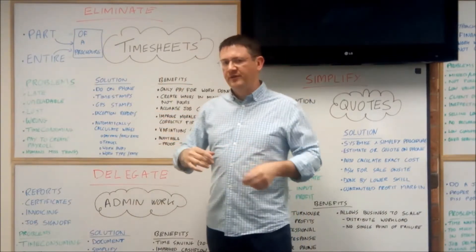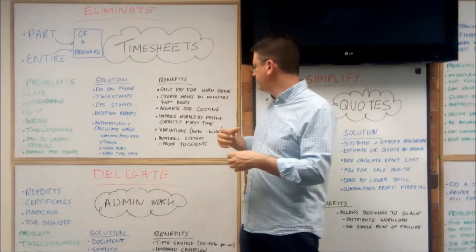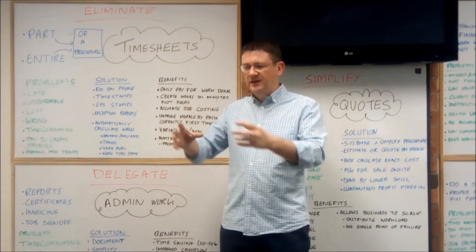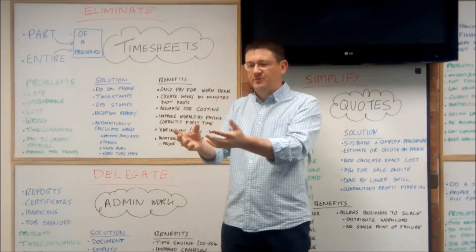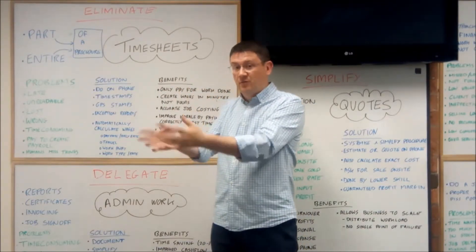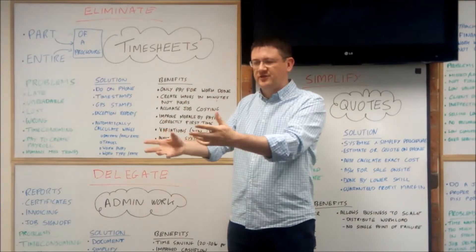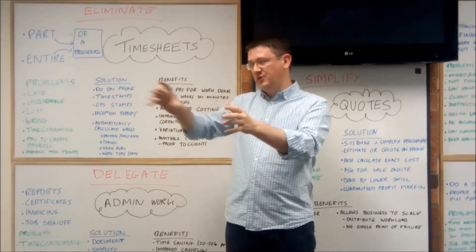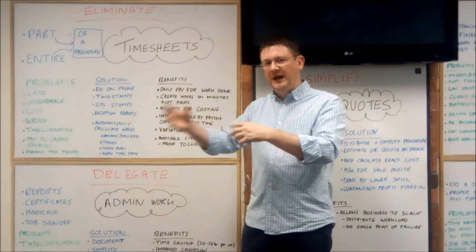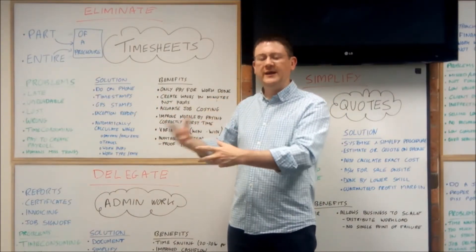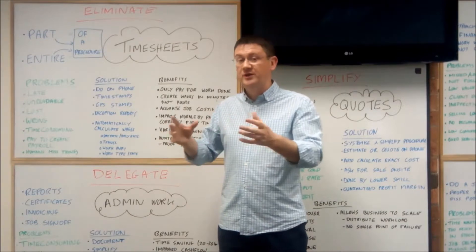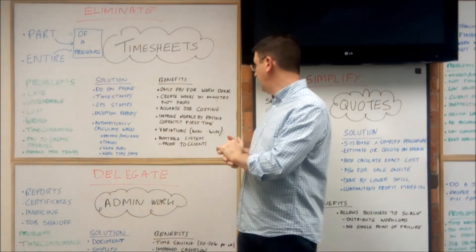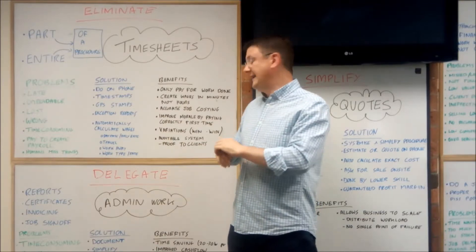The third benefit is something not a lot of people have thought about: accurate job costings. If we've got all the time entries in a nicely organized system and we know what we're paying the lads — their wages are in an organized system — we've actually got accurate labor costs. If we can tag those to a particular job, we now know exactly how much money we're spending on labor per job, which most trade businesses I've spoken to can't tell you.